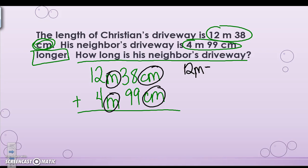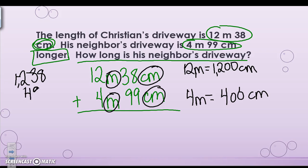So I know that 12 meters equals 1,200 centimeters, and 4 meters equals 400 centimeters. So my new converted problem is I have 1,238 centimeters plus 499 centimeters. So 9 and 8 is 17. 9 and 3 is 12, plus 1 is 13. 4 plus 2 is 6, plus 1 more is 7. I bring down my 1, so I have 1,737 centimeters as my final answer.